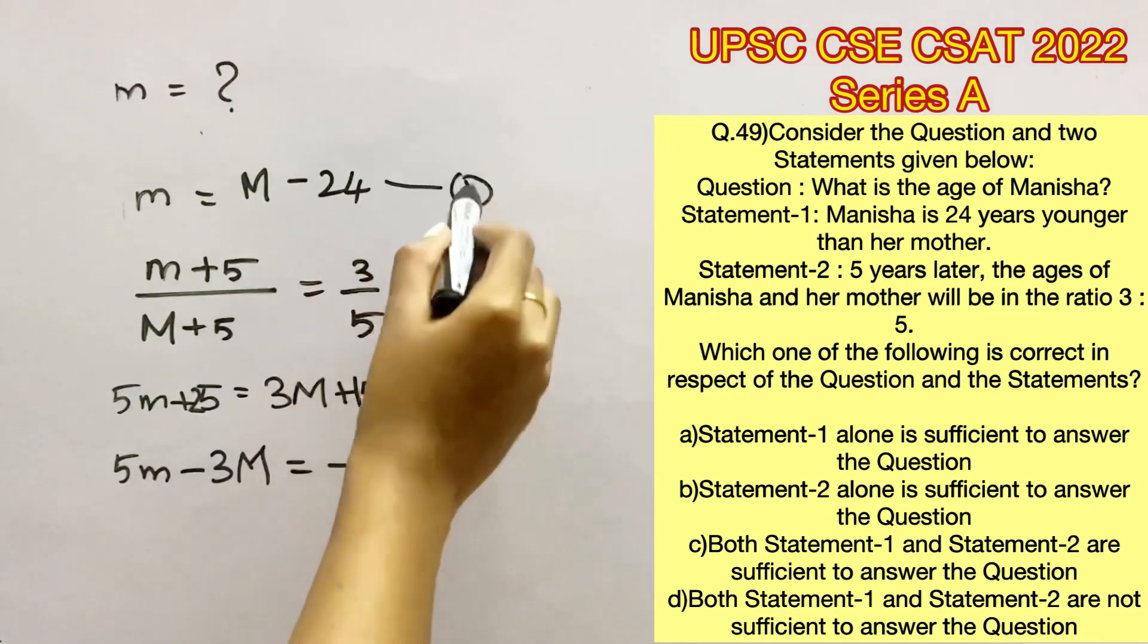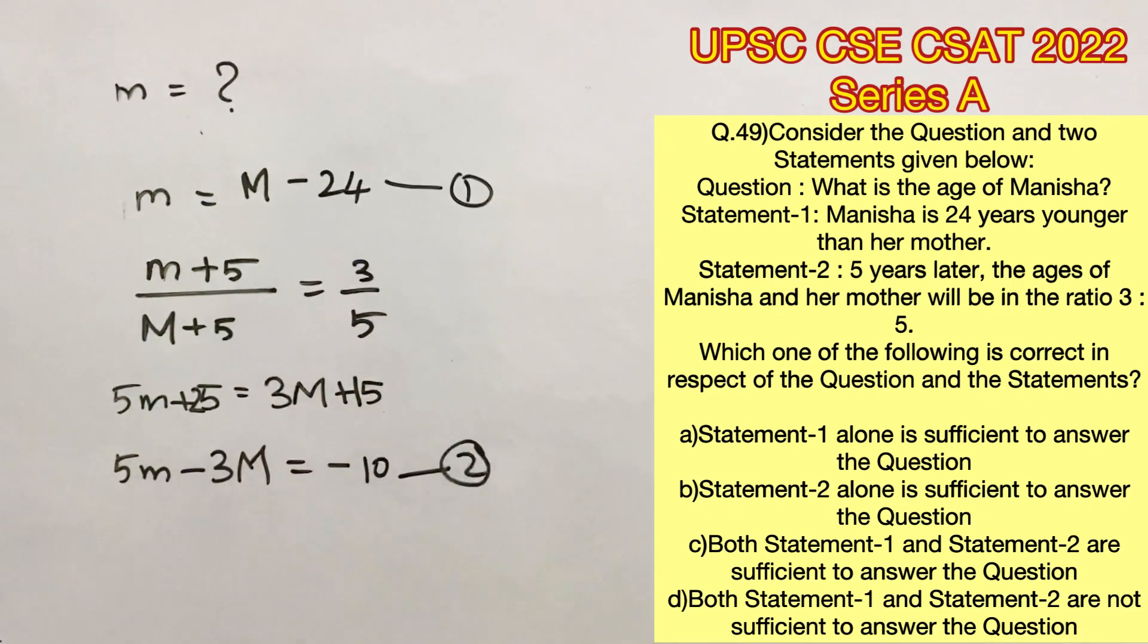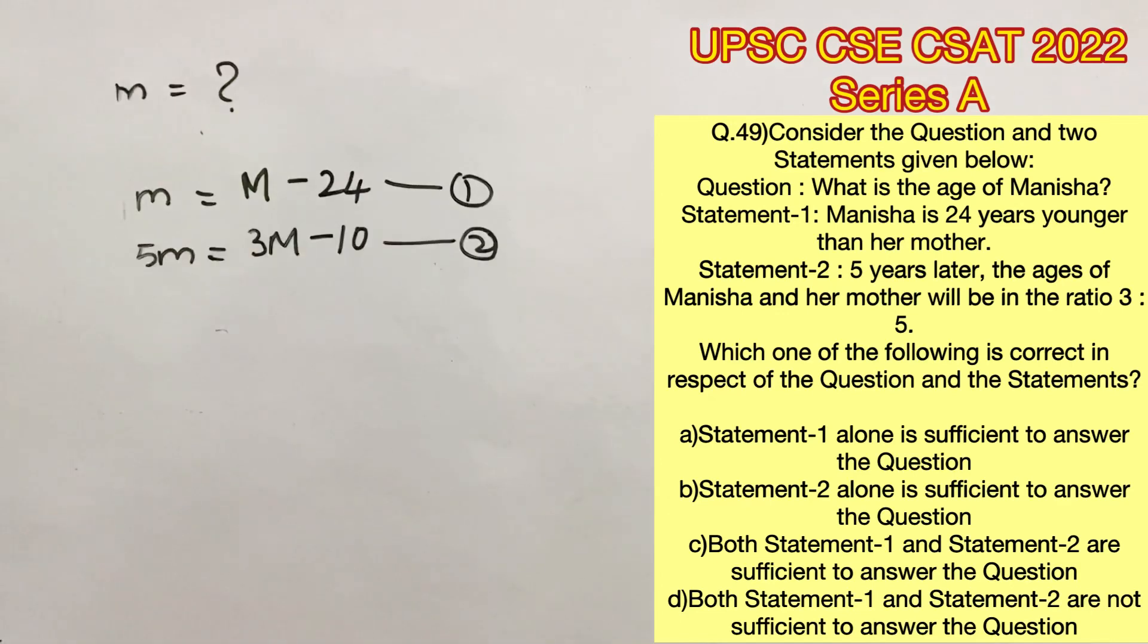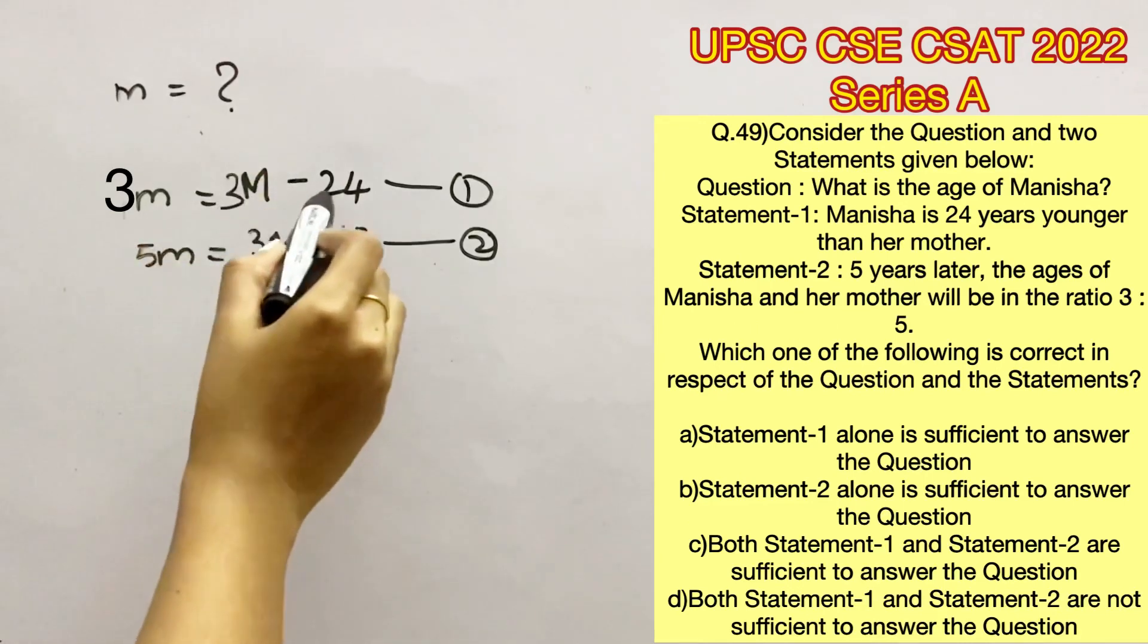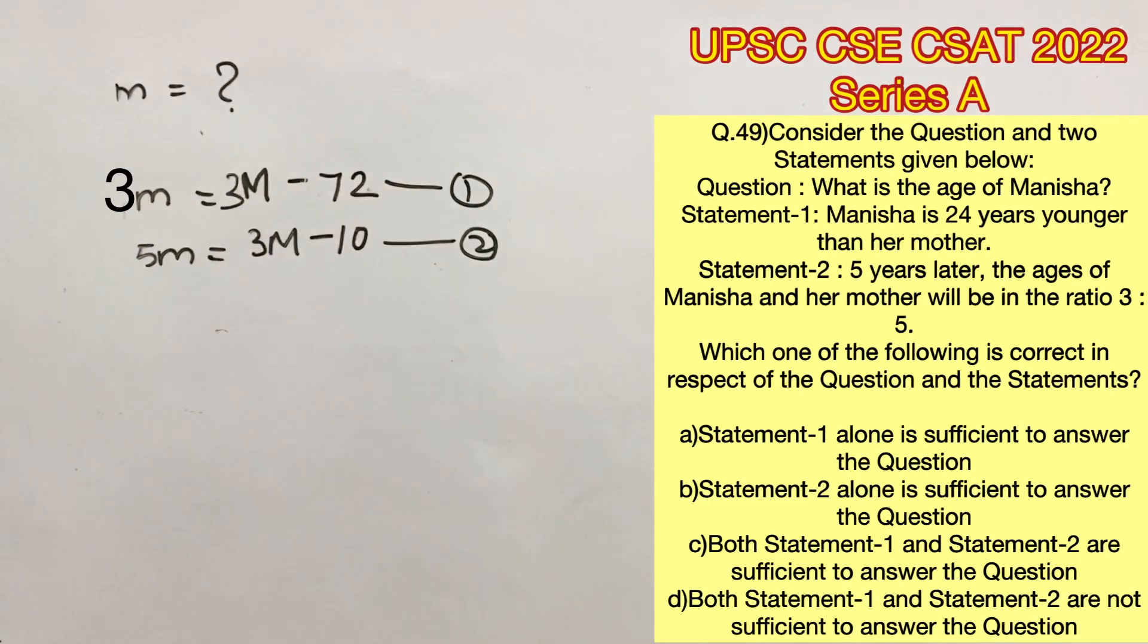Now we can consider this as the first equation and this as the second equation. To solve this I am multiplying the first equation by 3. So this will become 3 small m and this will become 3 capital M and 24 into 3 will become 72.